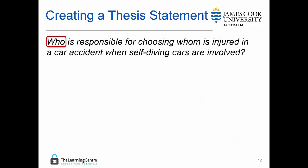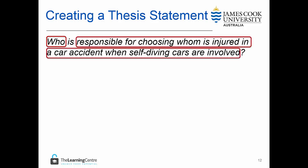In our question, the subject is unclear, so 'who' takes the subject place and the 'what' is the rest of the sentence — in this case, responsible for choosing whom is injured in a car accident when self-driving cars are involved.